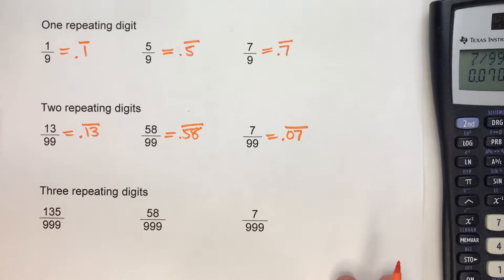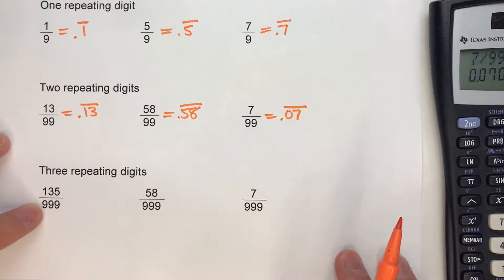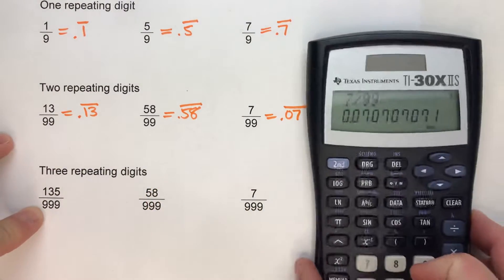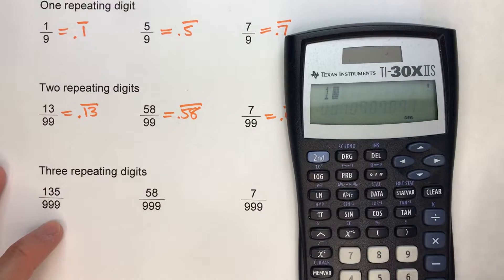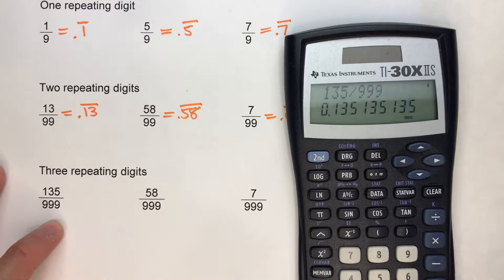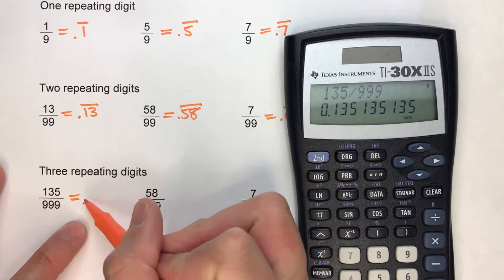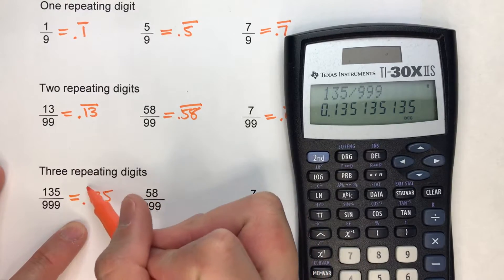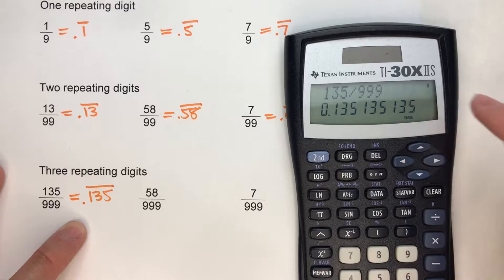And similarly, for three repeating digits, you've got 999ths. So 135 over 999. Notice, we've got three repeating digits. 0.135, 135, 135, 135.